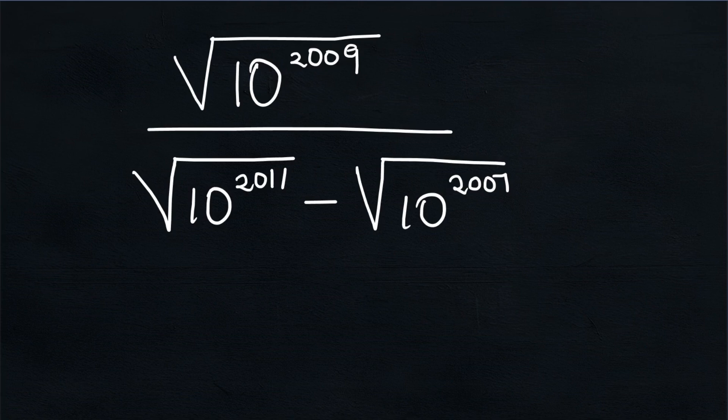Today we are required to simplify this expression without the use of a calculator. The first thing you will notice is that the exponents we are working with — 2009, 2011, and 2007 — are huge numbers, such that without a calculator I cannot evaluate 10 to the power of 2009, 10 to the power of 2011, or 10 to the power of 2007.